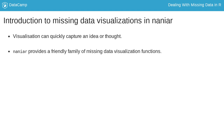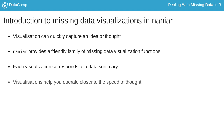Narnia provides a friendly family of missing data visualization functions, each presenting different visualization missingness summaries. Each of these visualizations is a nice compact shorthand for the data summaries. While you could create similar and more complex visualizations using the summary information from the previous lesson, this can be repetitive. The visualizations in Narnia reduce repetition and increase iteration, so you can operate closer to the speed of thought.